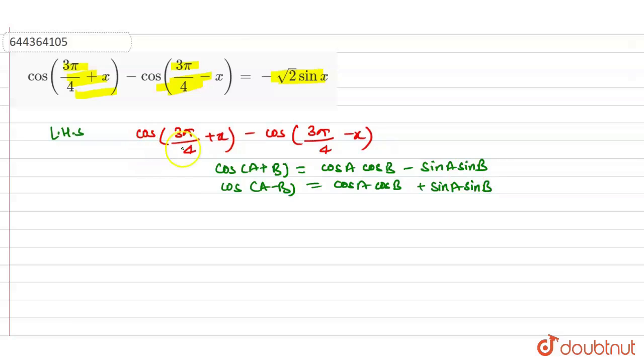So this is in the form of cos(a + b) and this is in the form of cos(a - b), where a is equal to 3π/4 and b is equal to x. So using this identity,